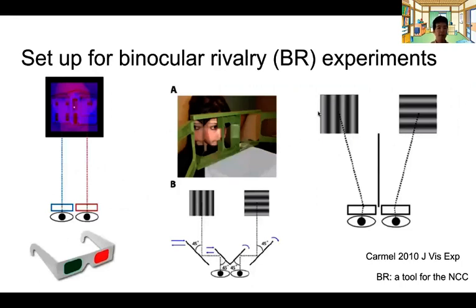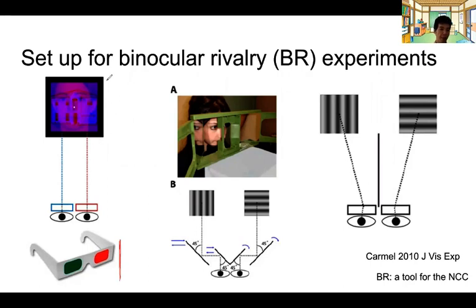Here are different ways to set up binocular rivalry experiments. The simplest setup — if we were in a lecture hall rather than online — would be to give each of you a red-green filter and let you see an image. Through the red filter, you see a face, and through the green filter, you see a house. The percept of the face and house then alternates between them. That's one typical binocular rivalry experiment.